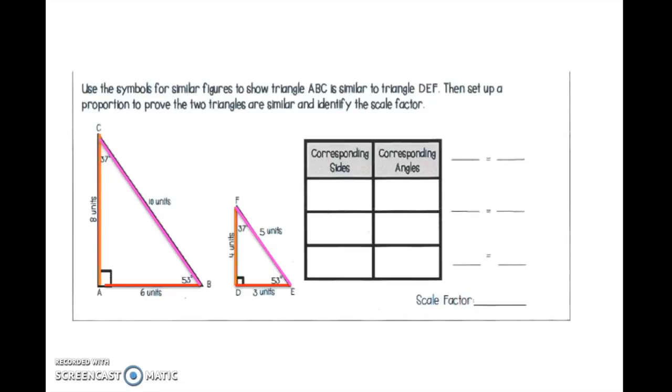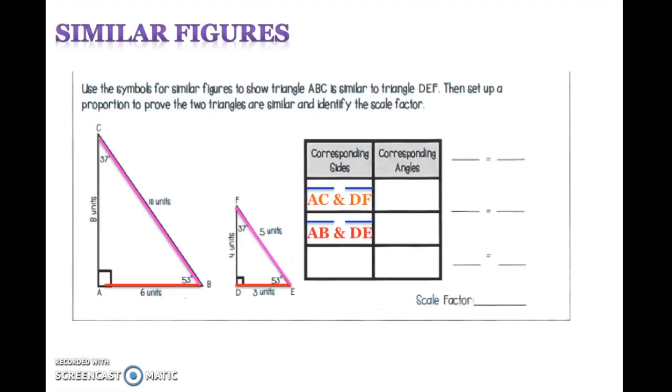So let's look at our corresponding sides. We have AC and DF. Those are our corresponding sides. Let's look at AB and DE. Those are our corresponding sides. Lastly, let's look at CB and FE. Those are our corresponding sides.